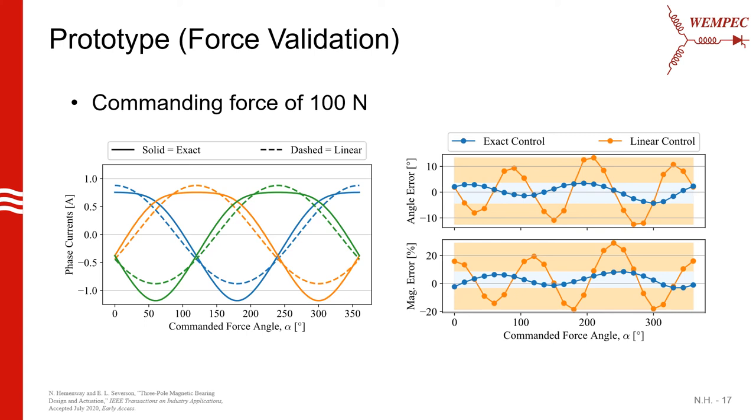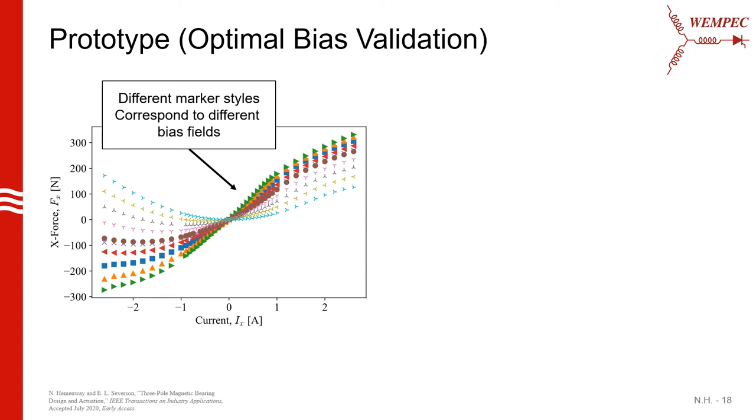The top plot shows the vector angle error and the bottom plot shows the vector magnitude error. You can see that using the linear controller, which is shown in orange, produces significantly more vector error than the exact control method, which is shown in blue. This was really exciting to see for the first time as it validates the force model.